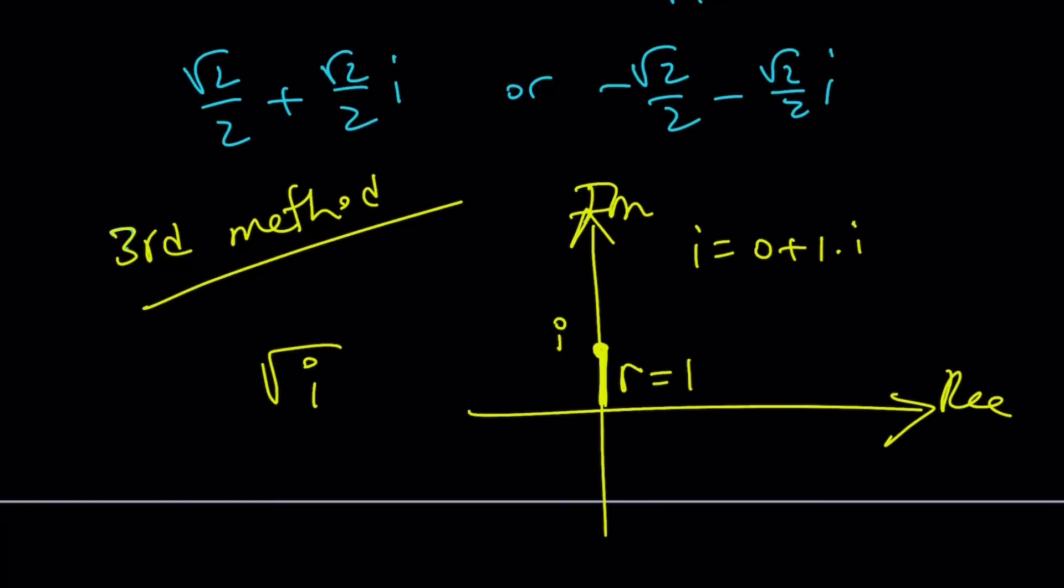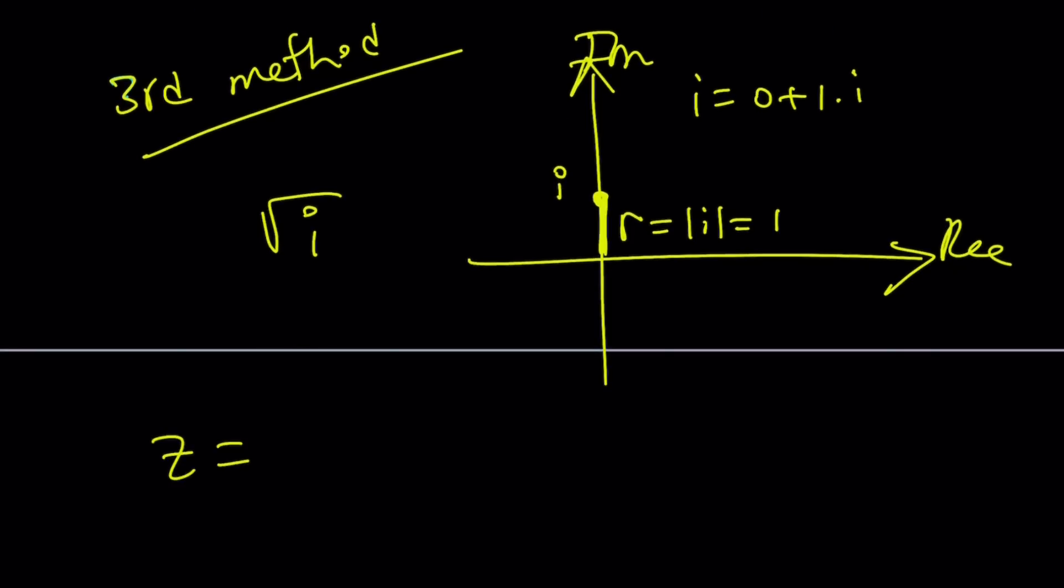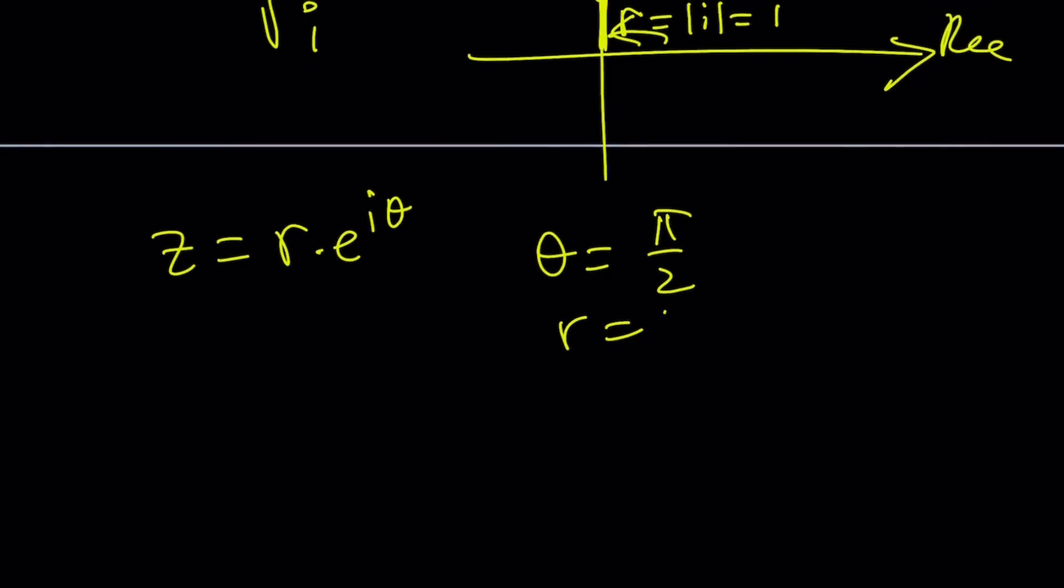This is my real axis, and the distance from 0 is going to give me r, or the absolute value of i, which is 1. So now I can write a complex number as r times e to the power i theta, theta being pi over 2 in this case, because we're basically on the imaginary axis, right? And r is 1. So our number, i,